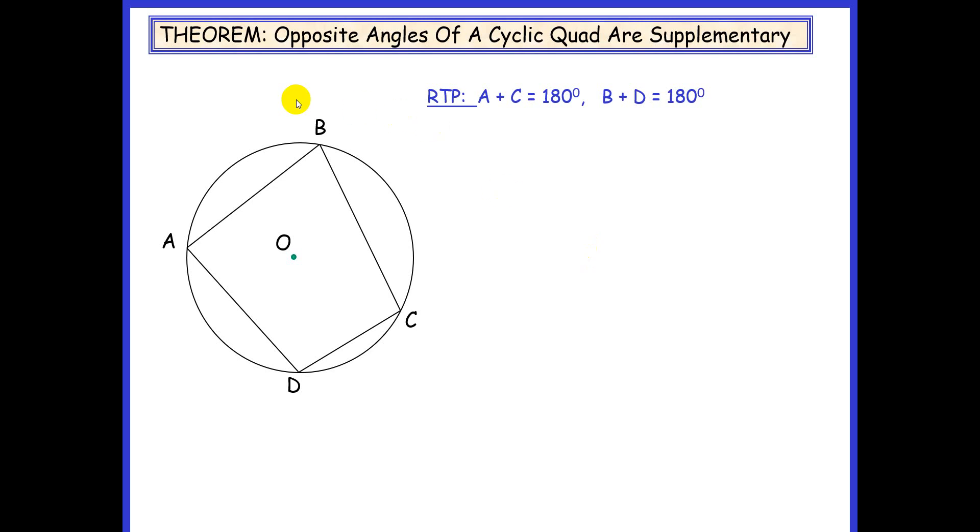In this video, we want to prove the theorem that states that the opposite angles of a cyclic quad are supplementary. So we want to prove that angle A plus angle C is equal to 180 degrees.